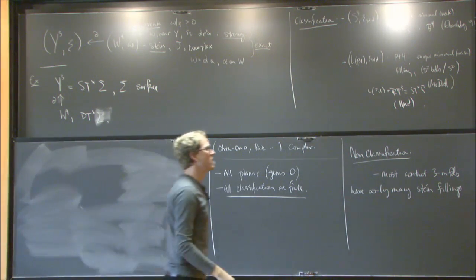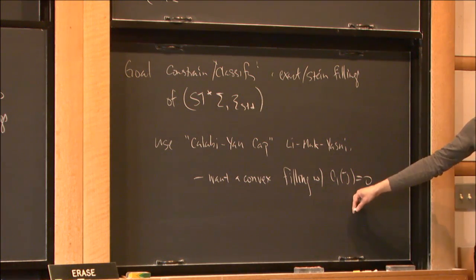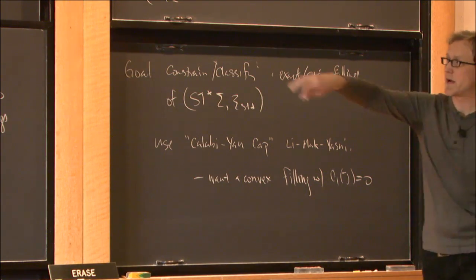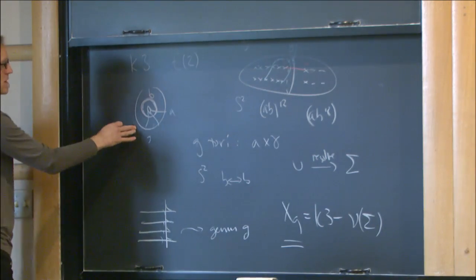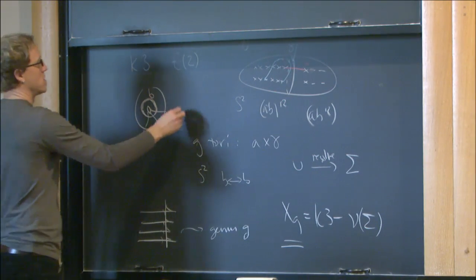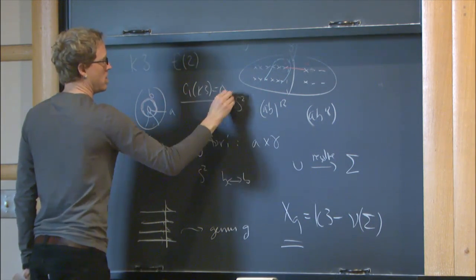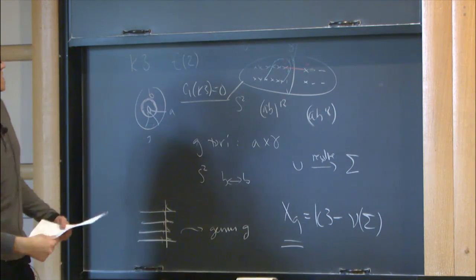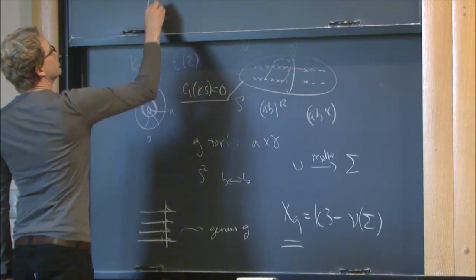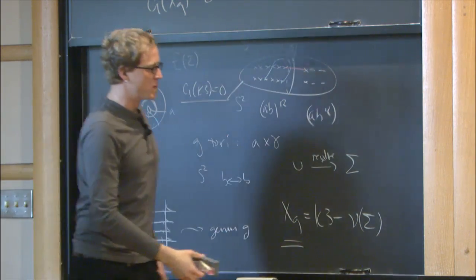The second condition we want—that c₁=0—comes from K3 having c₁=0, which follows from it being fibered by tori. Restricting to X_g, we also get c₁=0. K3 has b₁=0, b₂=22, b₂⁺=3, b₂⁻=19, signature=−16, and π₁=0. We're cutting out a neighborhood of a surface, which only deletes something with b₂=1 (one positive square thing). So for X_g: b₁=0, b₂=21+2g (picking up indefinite things from the genus of the boundary), b₂⁺=2, signature=−17, b₂⁻=19, and b₂⁰=2g.